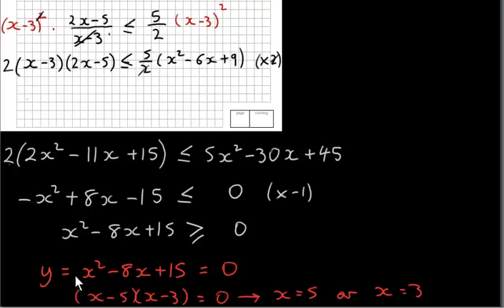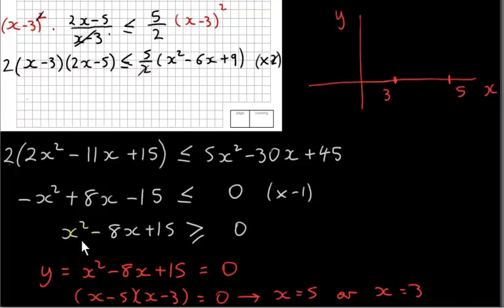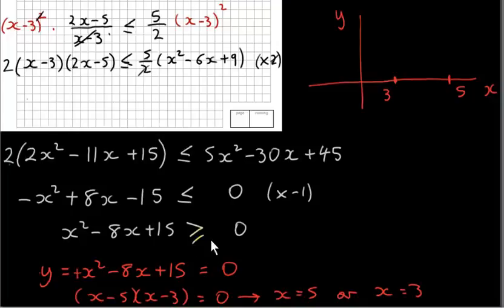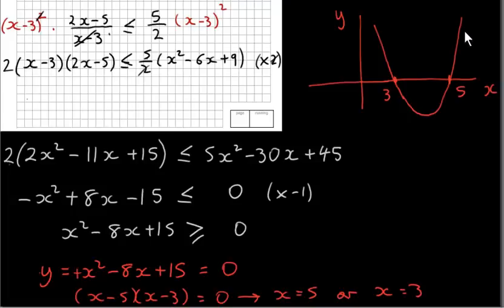Now we consider the graph of y = x² - 8x + 15. We know that when x = 3 or x = 5, y = 0, so the graph crosses the x-axis at these two roots. The graph has the shape of an upright parabola since the x squared term is positive. We are interested in points on this graph whose y values are greater than or equal to 0, so we want points on or above the x-axis.